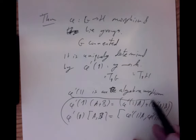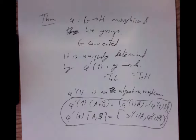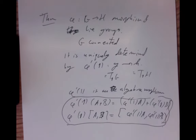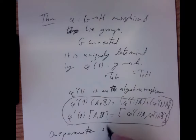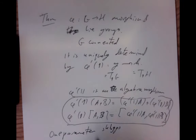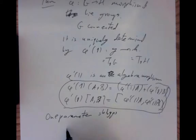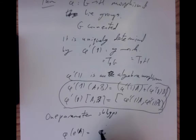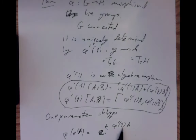We also want to say that one-parameter subgroups are matched up — that's part of our theorem. One-parameter subgroups will be matched up by: phi of e to the tA equals e to the t times phi-prime of 1 times A. So we match up the velocity vector and then just flow along.